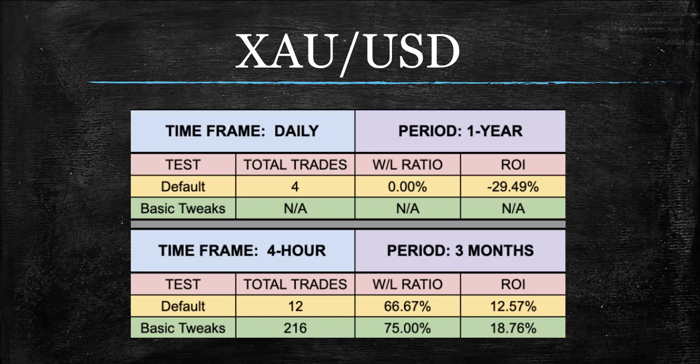I don't know if you've ever tried to trade gold on the 4-hour, but you're going to run into some pockets and times of the day where the spread just gets absolutely insane. I don't think the MT4 strategy tester really accounts for that, and that would eat into this number a bit. But especially if you're automating, that's a really good win-loss ratio despite all those trades.